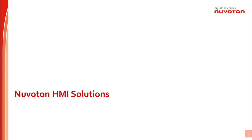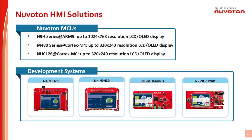In Part 2, I will introduce Nuvoton HMI solutions. For HMI solutions based on emWin, Nuvoton provides three product series. The first is the N9H series, based on ARM9 core, up to 300 MHz core speed, containing three sub-series: N9H20, N9H26, and N9H30, supporting up to 1024x768 resolution display. This is the high-end solution.